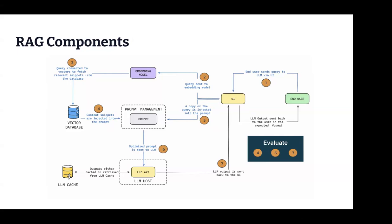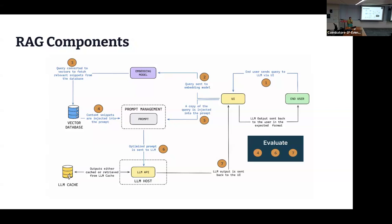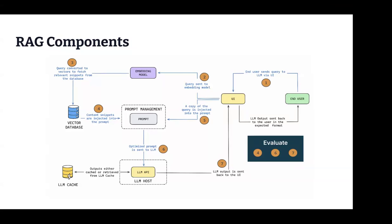Regarding LLM cache: if you have similar questions, you can check through the cache to avoid hitting the LLM again, since hitting an LLM is generally costlier. Depending on the volume of data, the operations can be expensive. So LLM cache works by — before going to step two — you check the cache, and if there are relevant cached outputs, you bypass a lot of the pipeline.